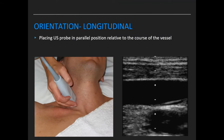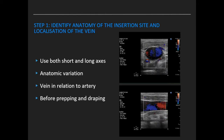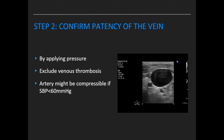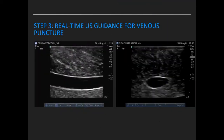On longitudinal view, the IJV sits parallel to the artery. When orientating to the vessel, identify the anatomy of the insertion site using both short-axis and long-axis views, look for anatomic variation, and determine the vein in relation to the artery. Note that blue indicates flow away from the probe and red indicates flow towards the probe — not strictly venous or arterial. Confirm vein patency by applying gentle pressure, which excludes venous thrombosis. Be aware that arteries may be compressible if systolic blood pressure is less than 60 mmHg.